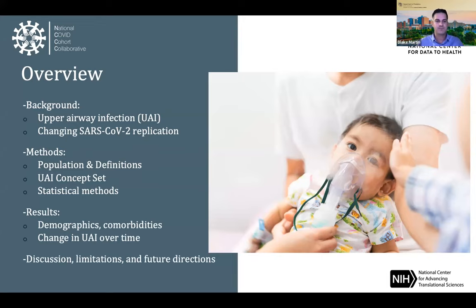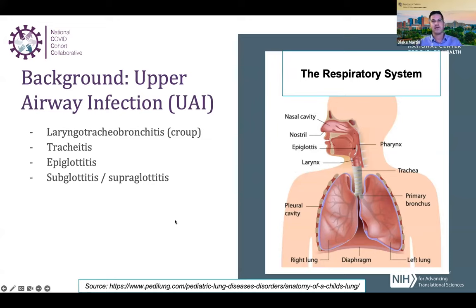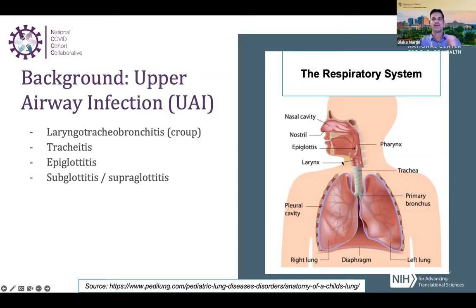A brief primer on the upper respiratory system: when we breathe in, gas comes through the nasopharynx or oropharynx, passes the epiglottis into the trachea, and goes down the right and left main stem bronchi. Upper airway infection means any infection or inflammation affecting these large airways, including laryngotracheobronchitis (viral croup), tracheitis, epiglottitis, and infection of the sub- or supraglottic areas.